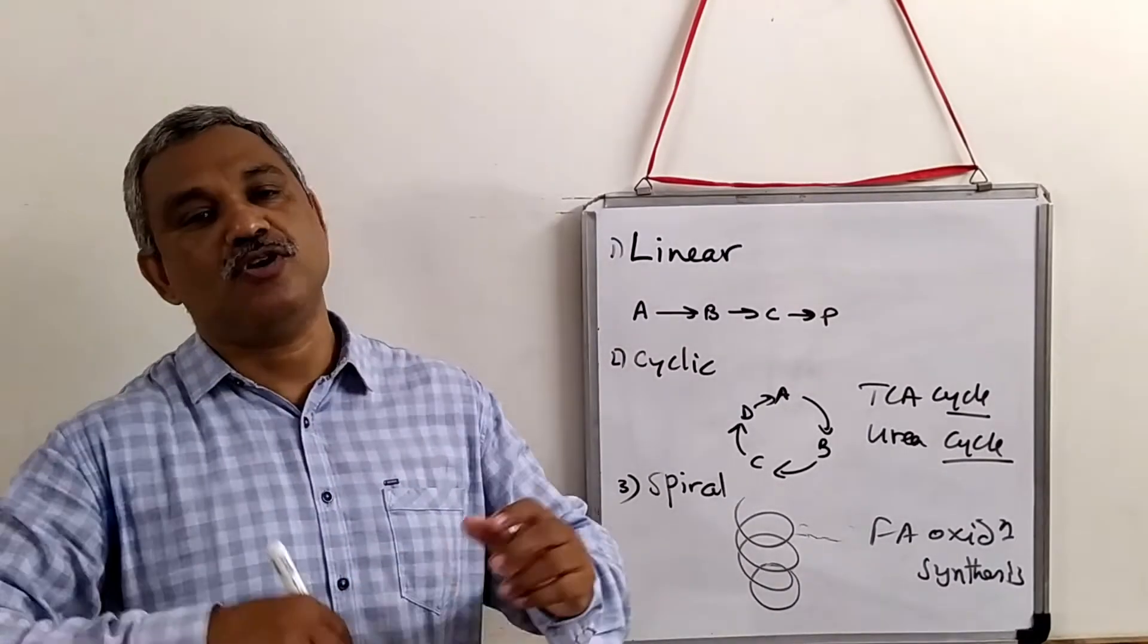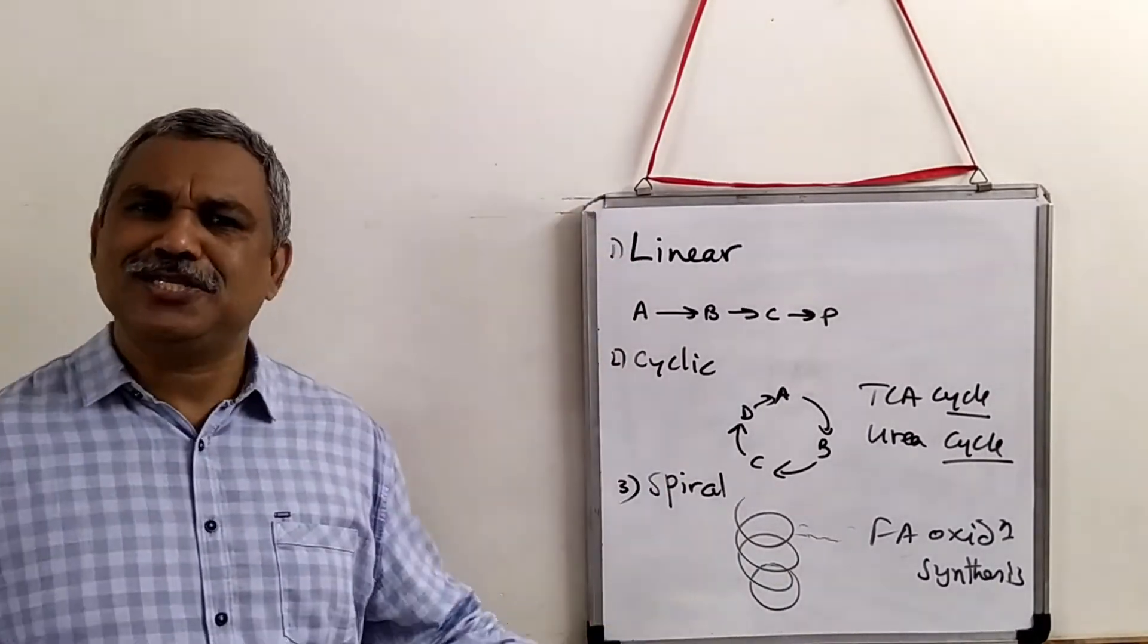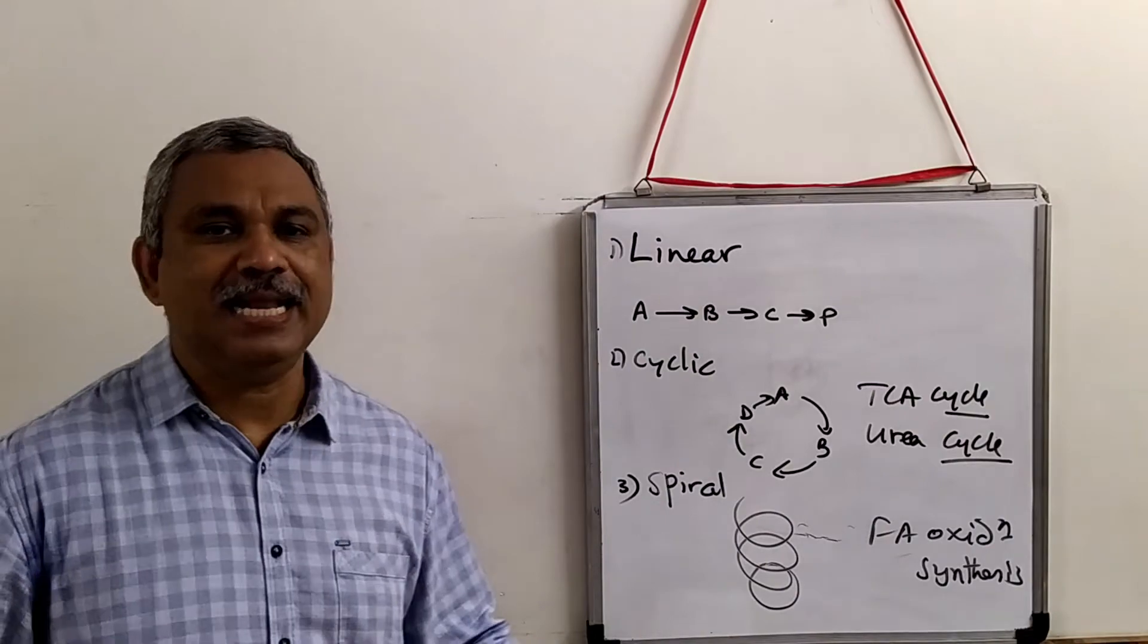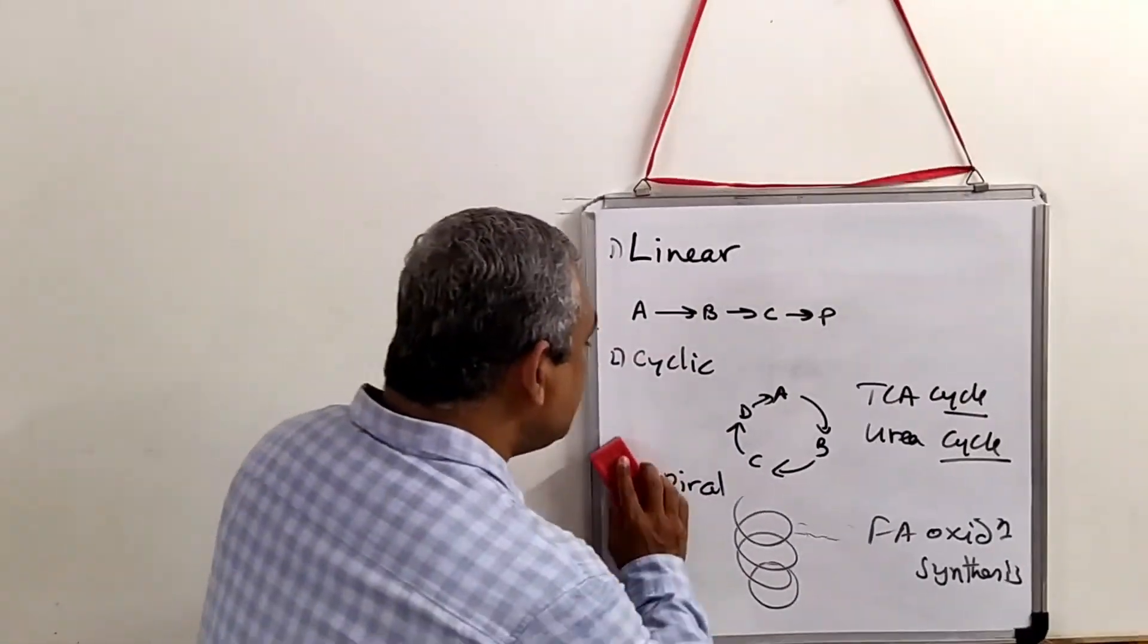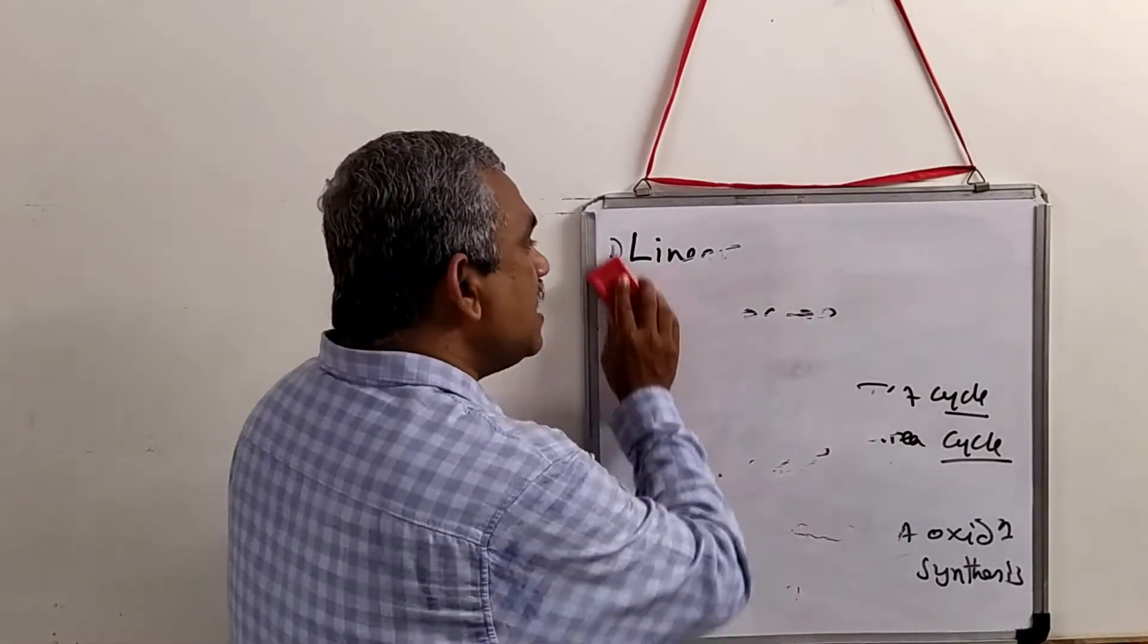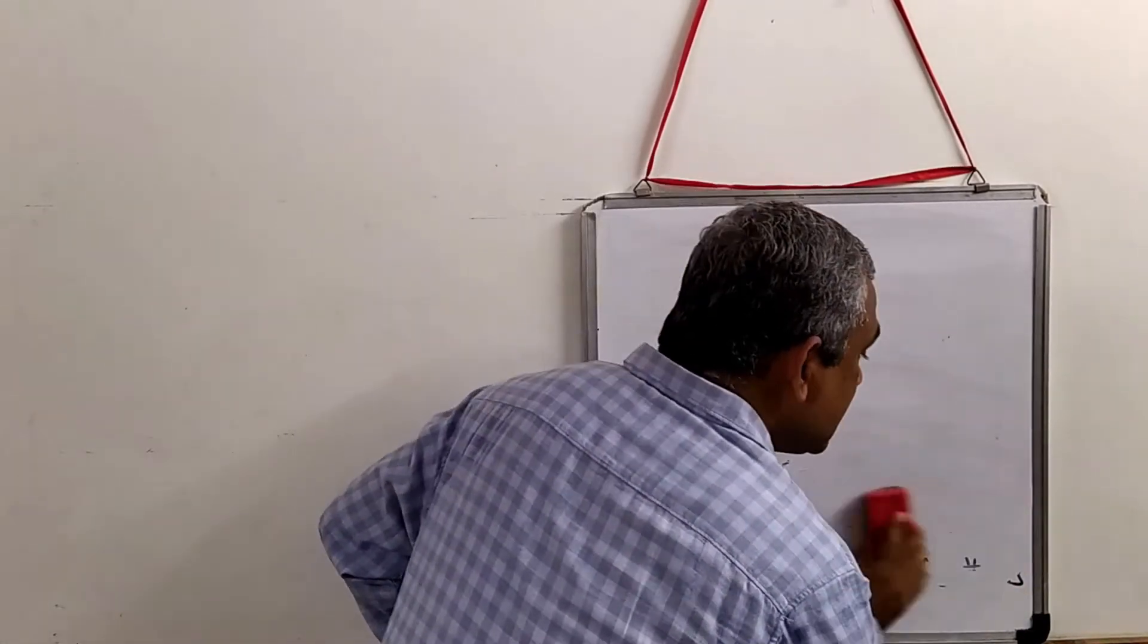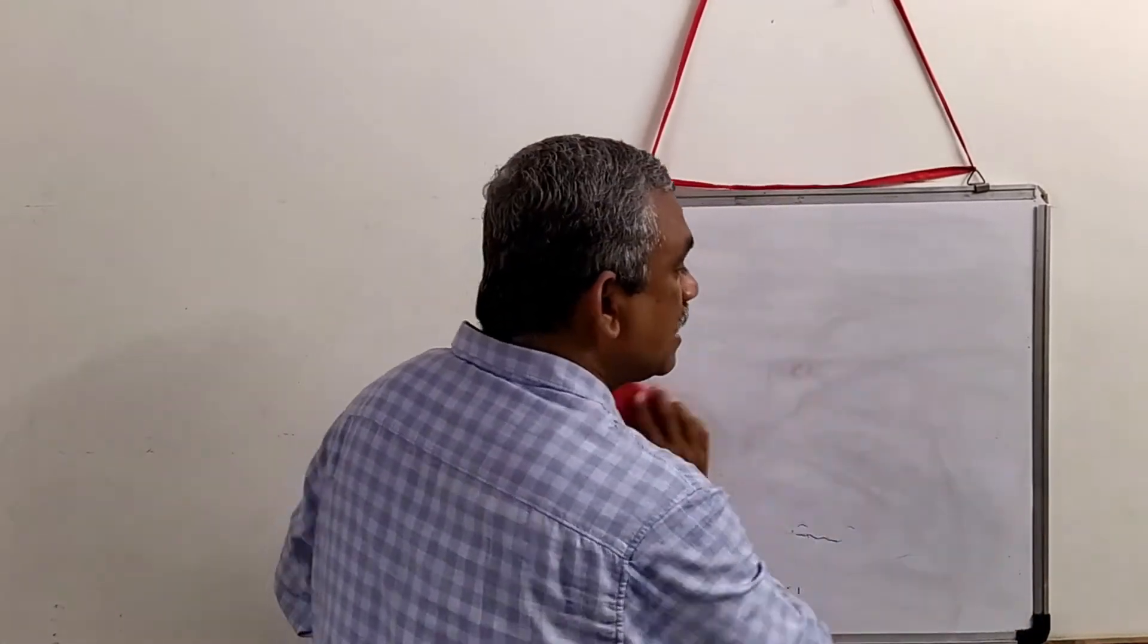So therefore, the first general feature of metabolism is there are three kinds of pathways: linear, cyclic, and spiral pathways. Now if these are the three kinds, let us see how these enzymes of these pathways are arranged.